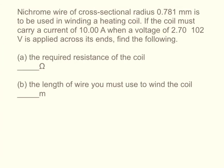Nichrome wire of cross-sectional radius 0.781 millimeters is used in winding a heating coil. If the coil must carry a current of 10 amps and a voltage of 2.7 times 10 squared volts is applied across its end, find the following: A, the required resistance of the coil, and B, the length of the wire you must use to wind the coil.